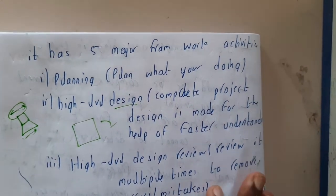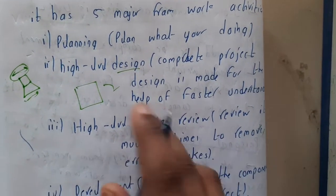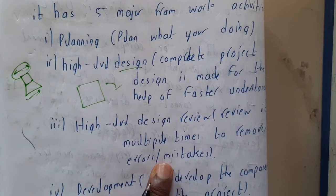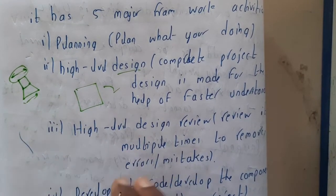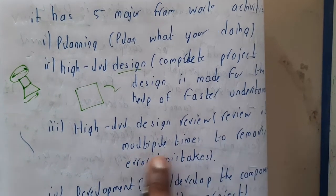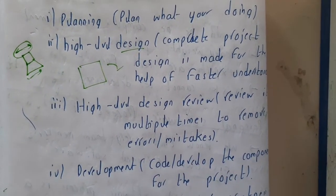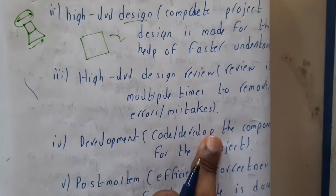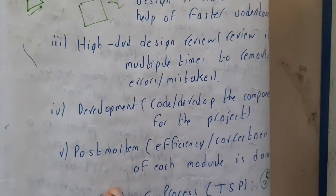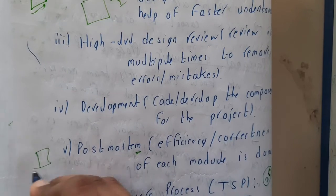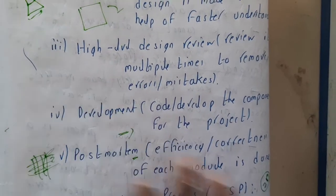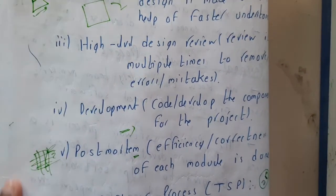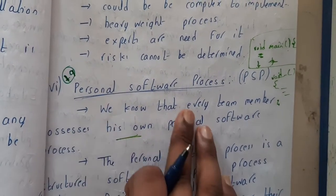The third activity is High-Level Design Review. Once you design something, you need to get a review, because reviewing helps identify your mistakes, errors, and bugs. Review it multiple times to remove errors and bugs. Then the fourth activity is Development — you start coding. The fifth activity is Postmortem, where you divide the whole project into modules and test them, or you can include testing within the development phase.